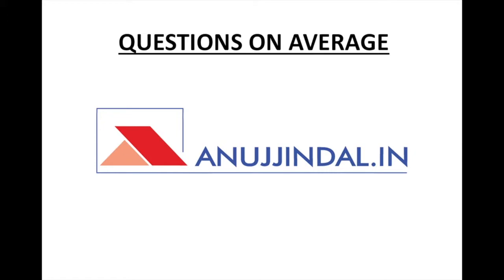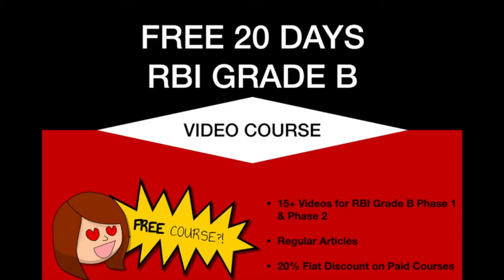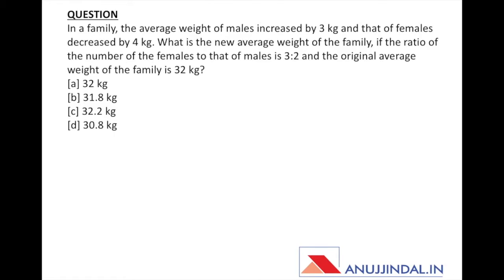Today we will take a few questions on the topic of averages, presented by Anuj Jindal. You can also join a 20-day free RBI Grade B video course, the link for which is given below in the description. The first question says: in a family, the average weight of males is increased by 3 kg and that of females is decreased by 4 kg. The ratio of the number of females to that of males is 3 to 2.